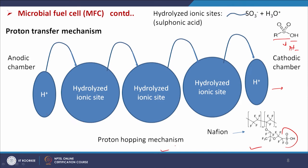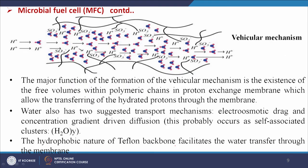There is also the vehicular mechanism. The membrane has porosity — gaps — through which H⁺ passes. The major function of the vehicular mechanism is the existence of free volumes within polymeric chains in the proton exchange membrane, which allow the transfer of hydrated protons through the membrane. Water also has two suggested transport mechanisms: electroosmotic drag and concentration gradient driven diffusion.